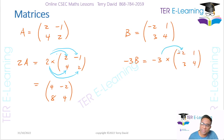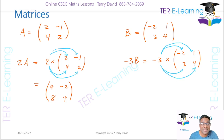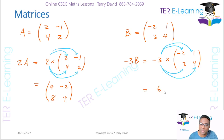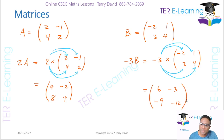To multiply this out, I take -3 and multiply by -2, by 1, by 3, and by 4. This is what we call a scalar multiplication of a matrix. So: (-3)×(-2) = 6, (-3)×1 = -3, (-3)×3 = -9, and (-3)×4 = -12. The result is [6, -3; -9, -12].